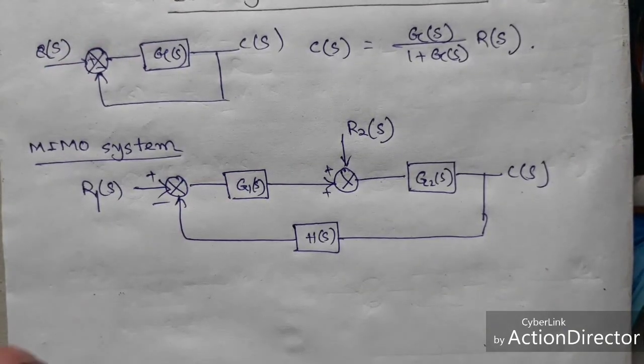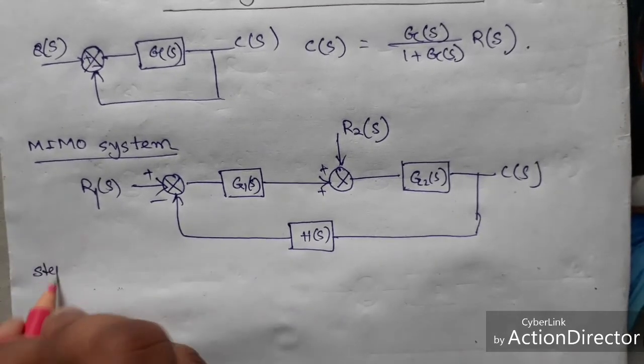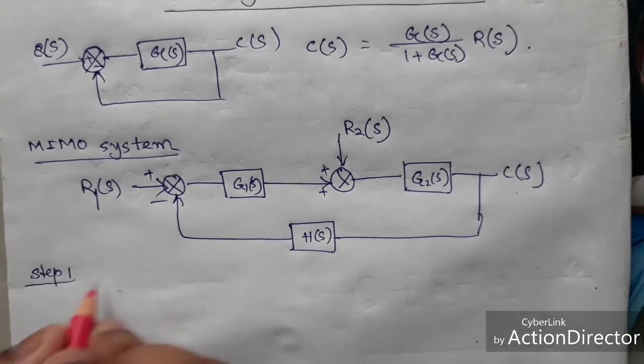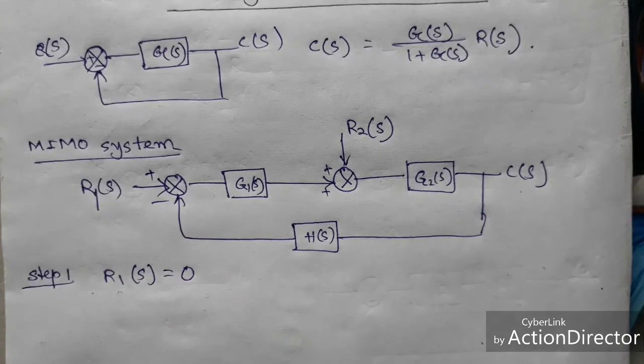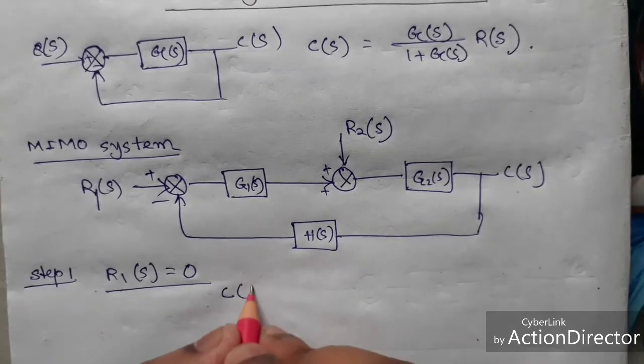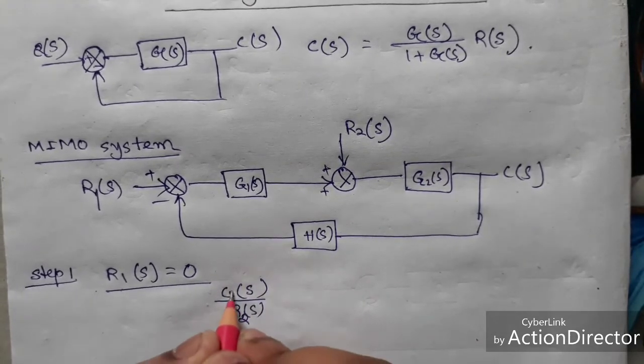So in step 1, how to solve this one. So first case in step 1, consider one input is 0 and solve for the another input, next and vice versa next step.